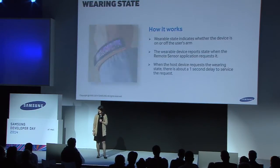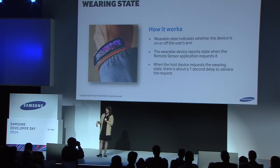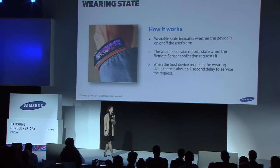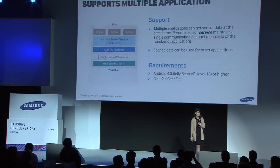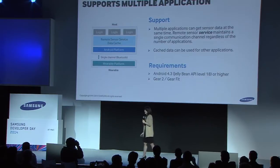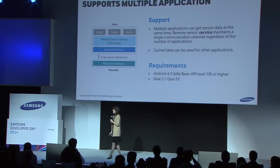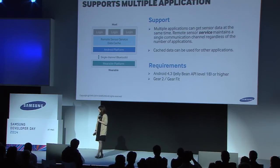The wearable detection actually tracks not just where the wearable is, but whether the user is wearing it or not. There's a heart rate monitor on the back of these devices — the Gear Fit as well as the Gear 2 — and it uses that heart rate monitor to check whether the user is actually wearing the device. There is a one-second delay between transferring data between the wearable and the phone. You can have multiple apps using remote sensor all running on your phone. There's a remote sensor service managing all those apps and the single Bluetooth connection between the phone and the wearable. You do need Android 4.3, and it works right now with Gear 2 and Gear Fit.